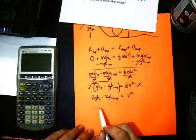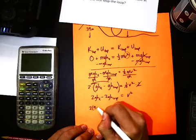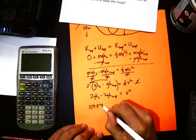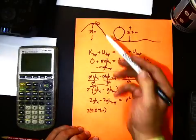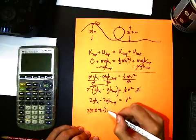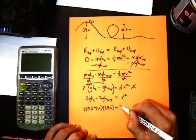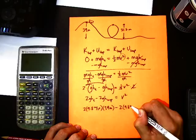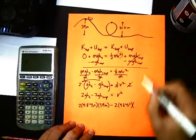So we're going to substitute our numbers. So we have 2 times 9.8 meters per second squared times the height at the top, which was, we can look at our roller coaster here, 39 meters. Subtract 2, 9.8 meters per second squared. Height of the loop, 31.7 meters.